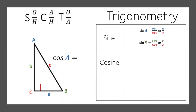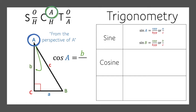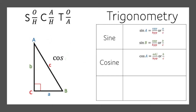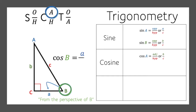Let's look at the cosine of A. Cosine of A, from the perspective of A — this time we're going to look adjacent, right next to the angle. So the measure of the adjacent side divided by the measure of the hypotenuse gives us the cosine of A. Cosine of B, from the perspective of B — we look at the adjacent side first: the measure of the adjacent side divided by the measure of the hypotenuse.